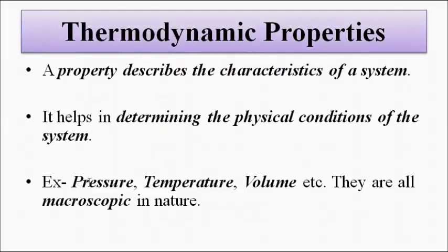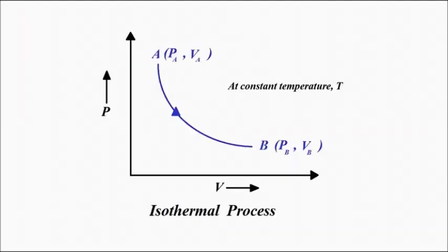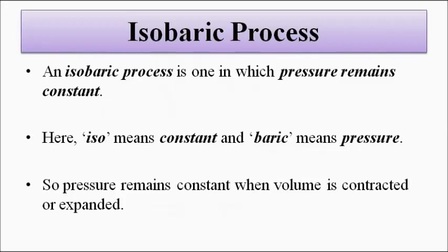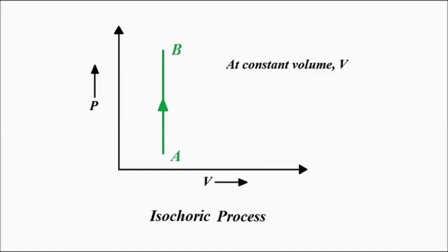So these are the three types of thermodynamic processes defined in terms of pressure, temperature, and volume: temperature remaining constant is the isothermal process; pressure remaining constant is the isobaric process; and volume remaining constant is the isochoric process. I hope you liked this video — please subscribe to Engineering Tutorial for more videos related to engineering, science, and technology. Have a great day, thank you very much.